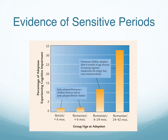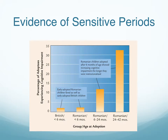Further evidence of sensitive periods comes from research involving children raised for part of their lives in orphanages. This involves children raised in Romanian orphanages versus those in a British orphanage, comparing children adopted at different ages — those adopted at less than six months, those adopted between six and 24 months, and those adopted between 24 and 42 months. If you're adopted at less than six months, the quality of your orphanage doesn't seem to matter very much in terms of its effect on cognitive impairment.